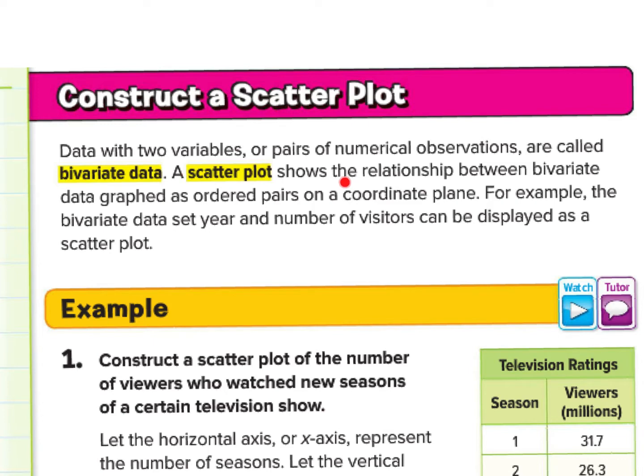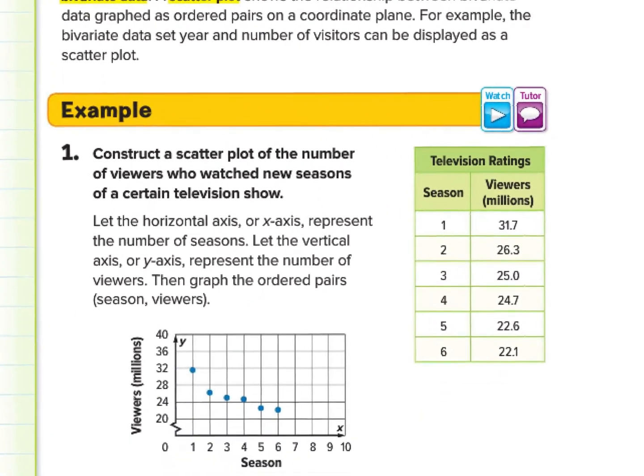A scatter plot shows a relationship between bivariate data graphed as ordered pairs on a coordinate plane. For example, the bivariate data set year and number of visitors can be displayed as a scatter plot. So we can have number of years for x value and the number of visitors per year can be displayed as a scatter plot. And this is what we mean by that.